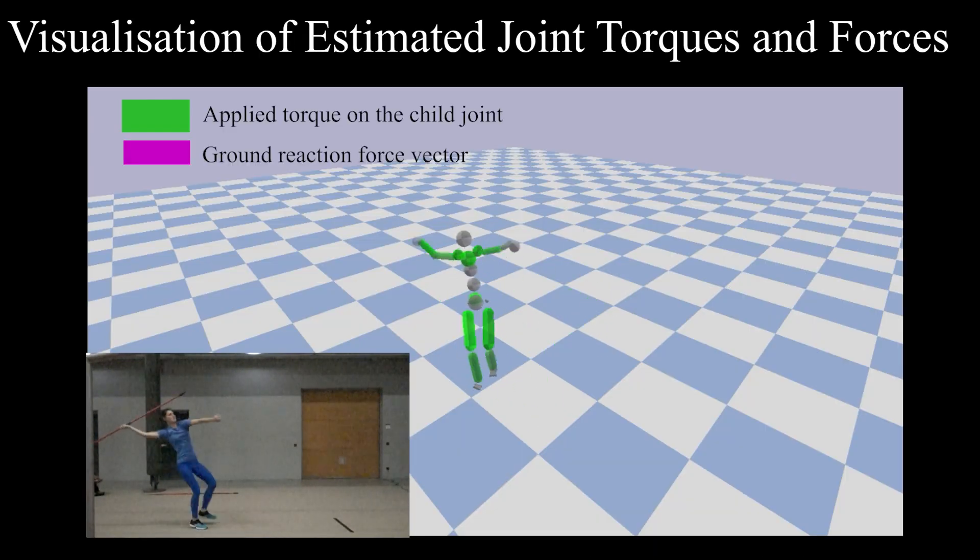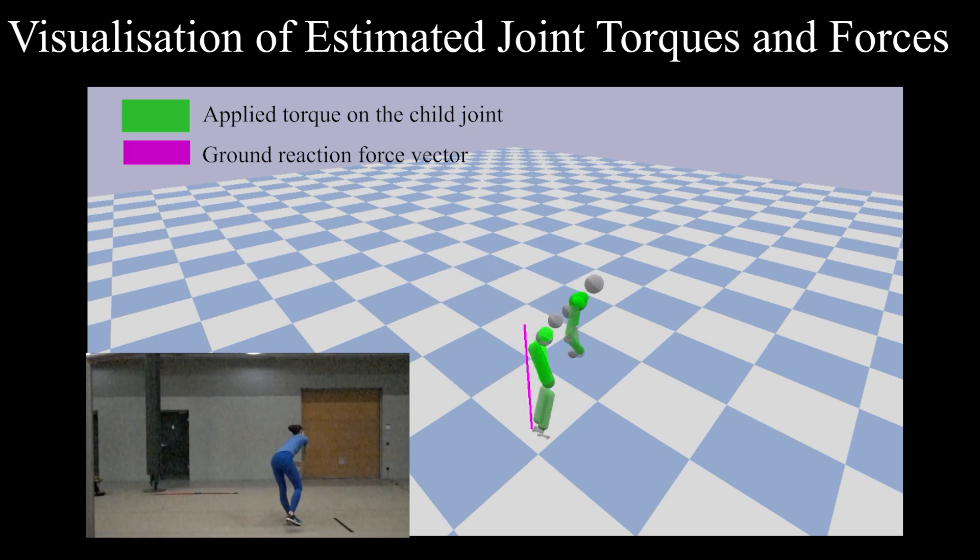From a video input only, we can also visualize the joint torques related to the muscle activation forces and ground reaction forces estimated along with the 3D motions, which can be useful for instance for motion analysis in sports.